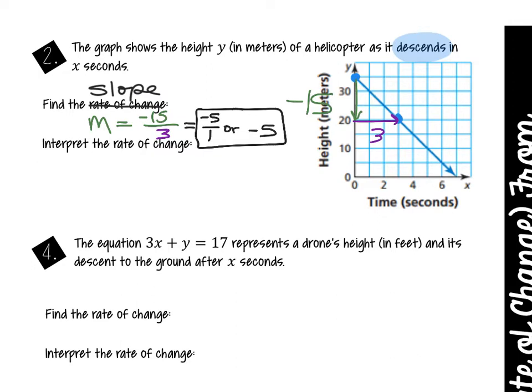If you get a fraction, you can reduce it — I do want it reduced, but you can leave it in fraction form over one or whatever the simplest fraction form is. Now we need to interpret or explain this rate of change — what does this mean for my helicopter in real life?